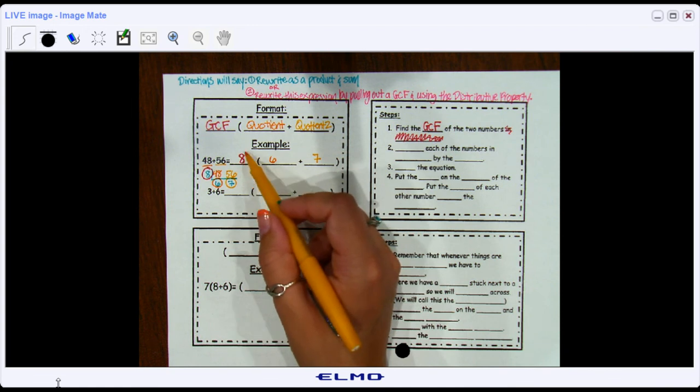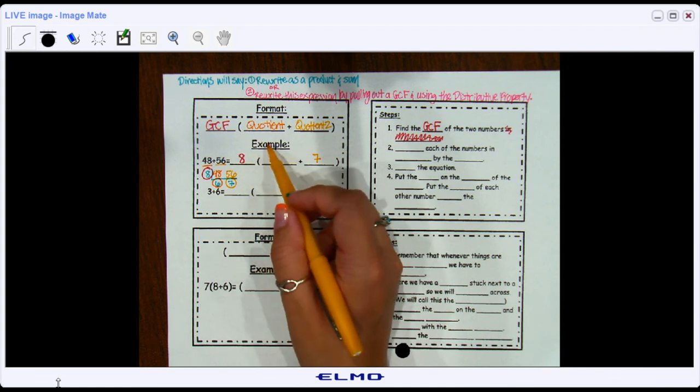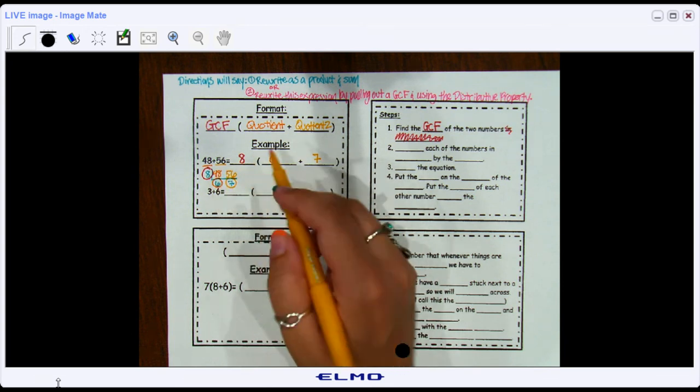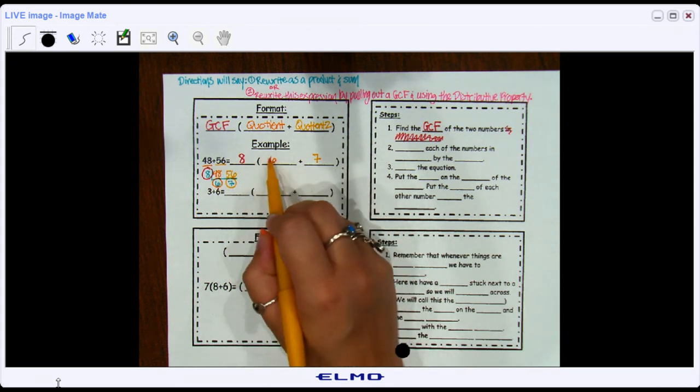What this is saying is that this is the same thing as the left side. I just rewrote it as a product. I'm multiplying something with the sum of something else, and the specific thing in front is the GCF. So if I multiply this out, or the common word is distribute, I should get what I started with. Double check: 8 times 6 is 48.